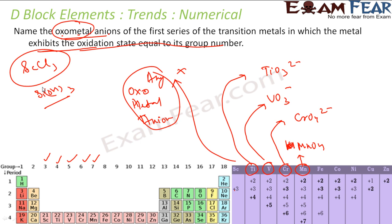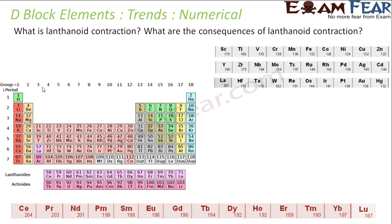The next question is: what is lanthanide contraction and what are its consequences? Due to poor shielding by 4f electrons, there is a greater-than-expected decrease in the ionic radius of elements in the lanthanide series from atomic number 57 to 71.